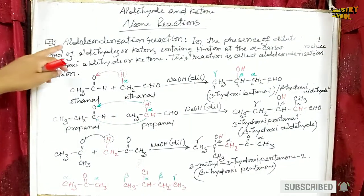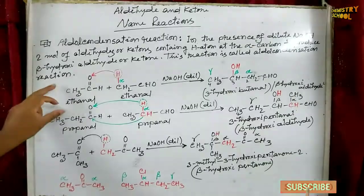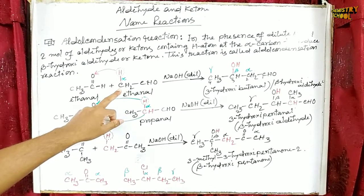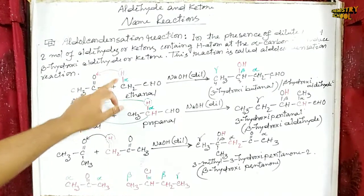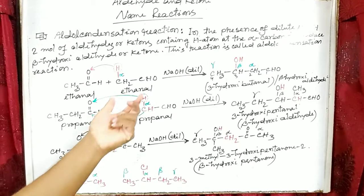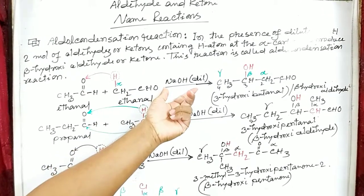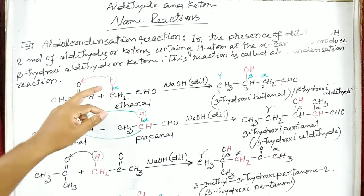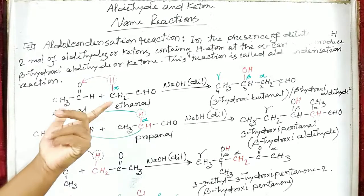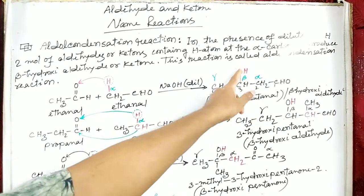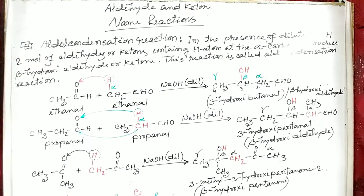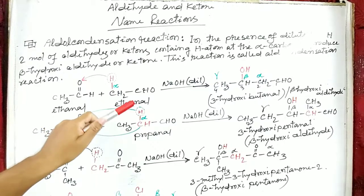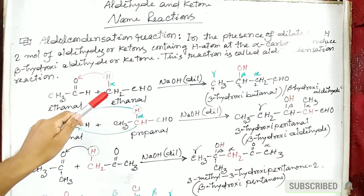Now we are going to discuss the aldol condensation reaction. I would like to start with the example of ethanal. Ethanal contains an alpha carbon, and at this alpha carbon there is a hydrogen atom. As you know, ethanal is an aldehyde. In the presence of dilute base like sodium hydroxide, two moles of aldehyde containing a hydrogen atom at the alpha carbon react together to produce beta-hydroxy aldehyde. This type of reaction is called aldol condensation reaction.